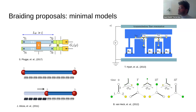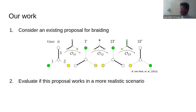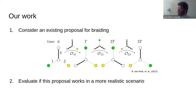In this context is where we introduce our work. We consider an existing proposal for braiding — specifically the proposal by Bernard van Heck in 2012, where he introduces the concept of a trijunction. We take this proposal and try to put it in a more realistic scenario, in a context where we can see how it would perform in a more realistic device with more ingredients.